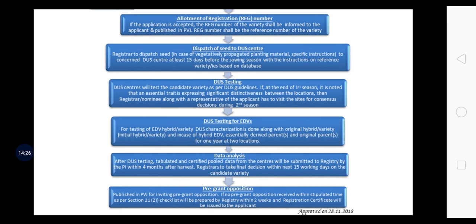DUS testing means conducting the test at DUS centers. The candidate variety is tested as per DUS testing guidelines. Remember that for every crop, DUS testing centers are different and are located in different locations across the country. If at the end of the first season it is noted that the essential trait is not expressing significant distinctness between the locations, then the Registrar or nominee along with the representative of the applicant has to visit the sites for consensus decisions during the second season — different results should not be obtained at different locations.